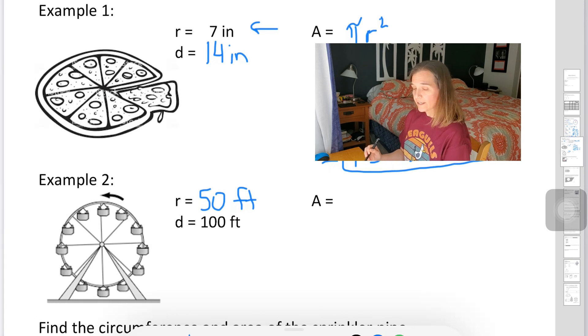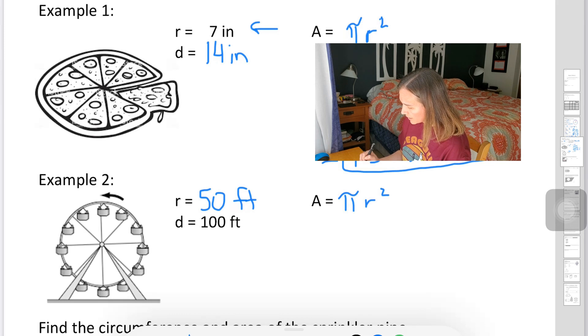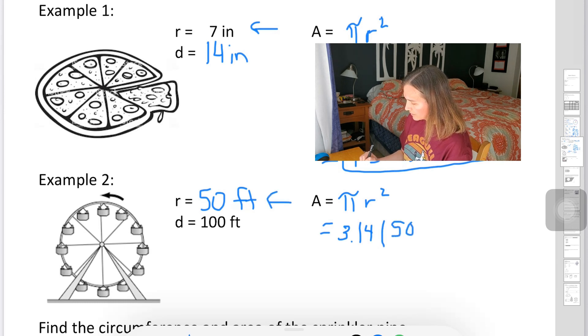Again, I want to write down my formula. Area equals pi times radius squared. And then we fill in the numbers we know, 3.14 for pi. Radius in this case is our 50. And I'm going to square that.